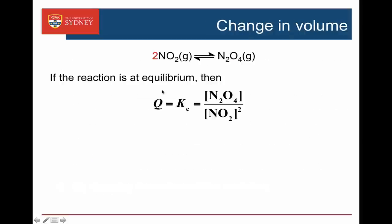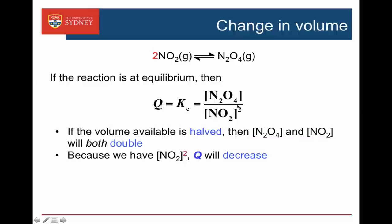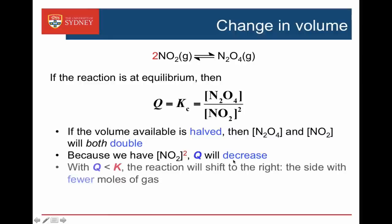Changing the volume: if the reaction is at equilibrium, then Q is equal to K. If we halved the volume, then since C equals N over V, we would double the concentration of both the N2O4 and the NO2. Halving the volume will double their concentrations. But because we have NO2 squared in our formula for Q, Q will get smaller — the effect of doubling NO2 will be bigger than the effect of doubling N2O4, because it's NO2 squared. So when we double the concentrations by halving the volume, Q decreases, and if Q is less than K, the reaction will shift to the right — the side with fewer moles of gas.